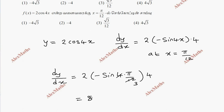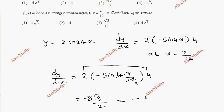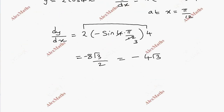So this gives 8 into minus sin(π/3), which is minus 8 × √3/2. Simplifying: minus 4√3. This is the slope of the tangent.